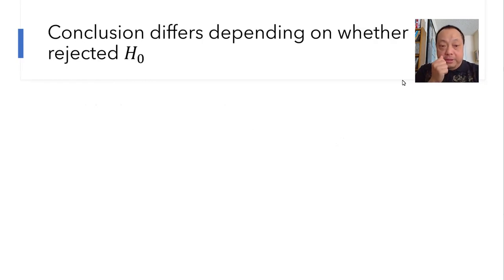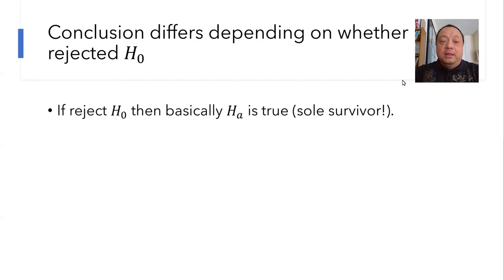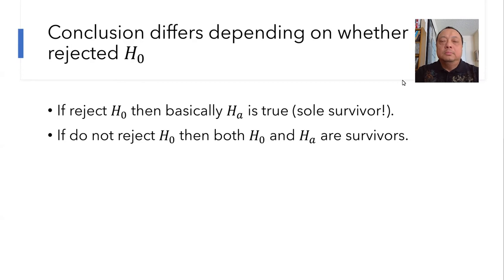Now let's write the conclusion. It's different depending on whether you reject H0 or you don't reject H0. If you reject H0, then basically HA is the only surviving hypothesis, is considered true, and you write that conclusion. But if you do not reject H0, then what happens? Neither H0 nor HA is rejected. Both are surviving. Therefore both can be true.